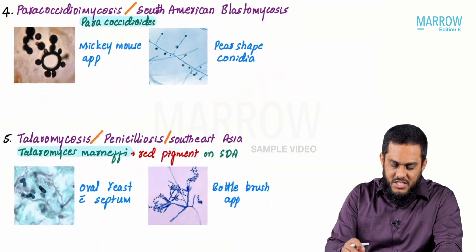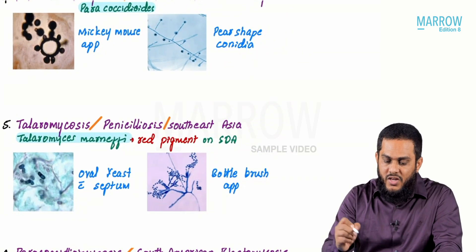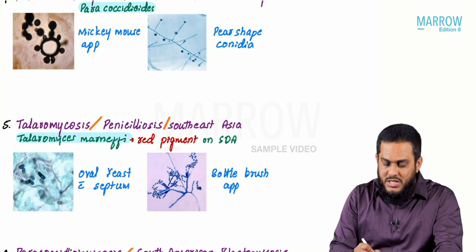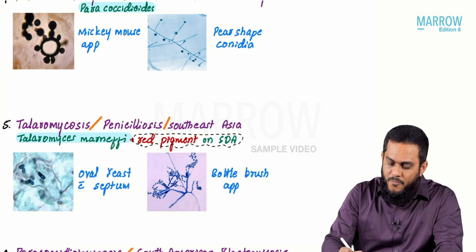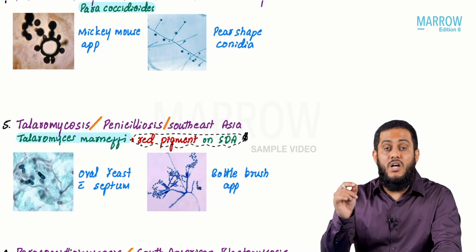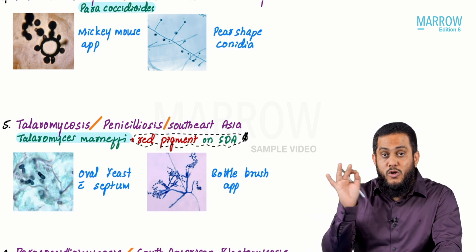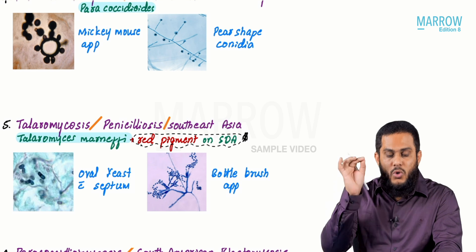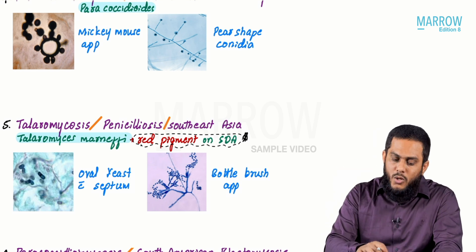If you talk about Talaromyces marnefi, it produces red pigment on SDA — that is a very important point. Which are the fungi producing red pigment on SDA? One of them is Talaromyces marnefi.